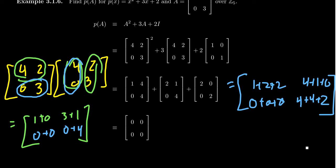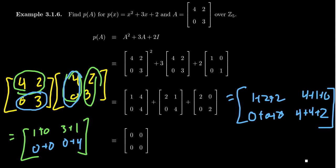This example shows how by combining matrix multiplication with addition and scalar multiplication, we can evaluate any polynomial expression on a square matrix.